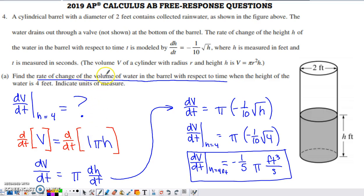This is problem number four from the 2019 AP Calculus AB and BC exams, a non-calculator question. They start you off with a diagram of this cylinder. There's water in the cylinder, the diameter is two feet, and the height of the water within the cylinder is changing because the water is draining from the cylinder.